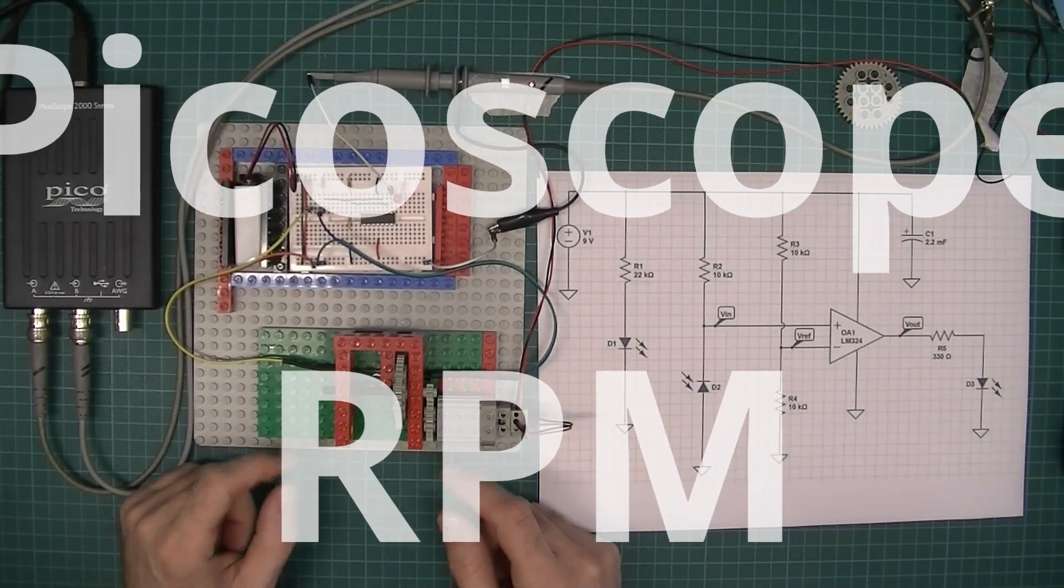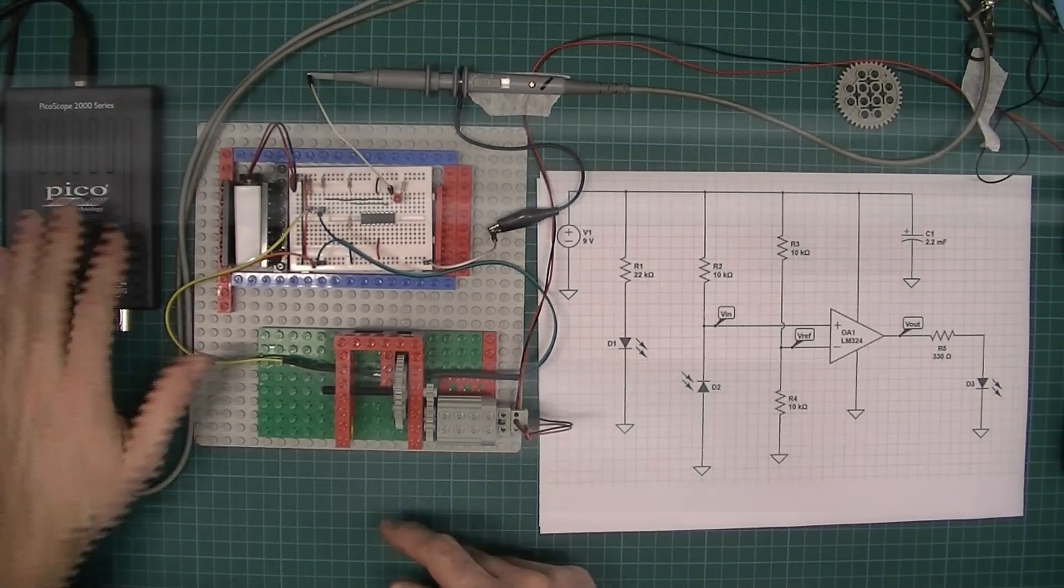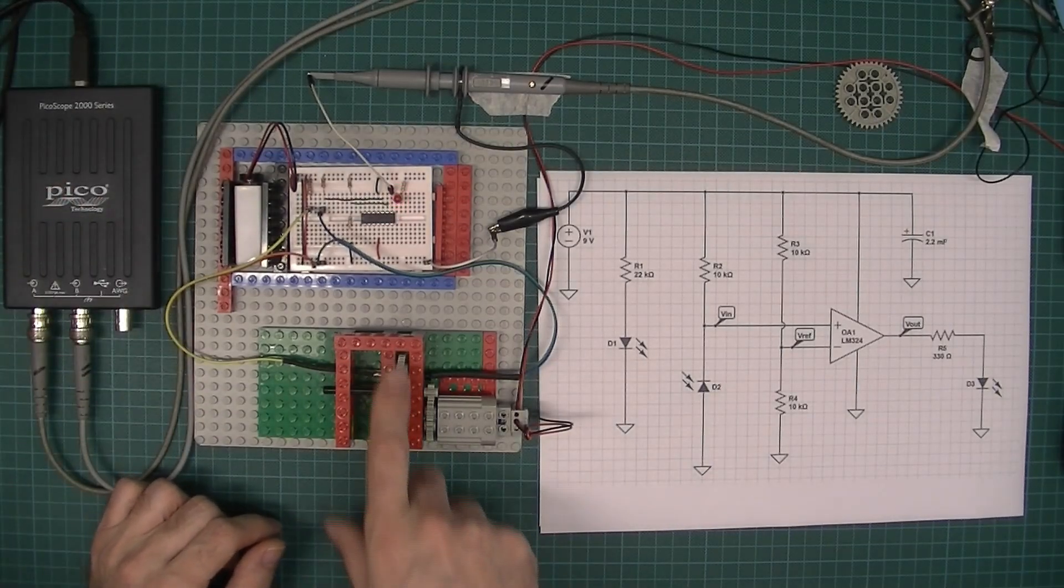Hi, I'm going to make this a brief video as I'm not sure how much interest there's going to be, but what I'm going to use is the PicoScope to measure how fast this spur gear is going to rotate.